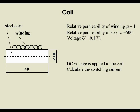Coil. Relative permeability of winding, 1. Relative permeability of steel, 500. Voltage, 0.1 volts. DC voltage is applied to the coil. Calculate the switching current.